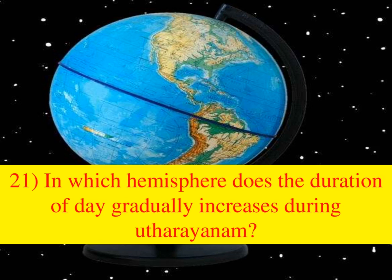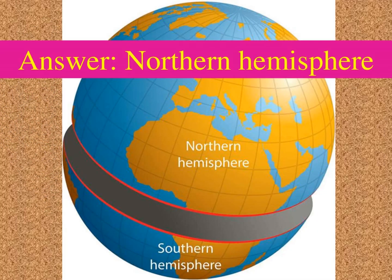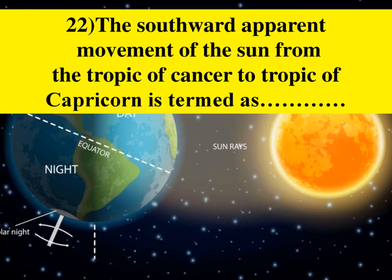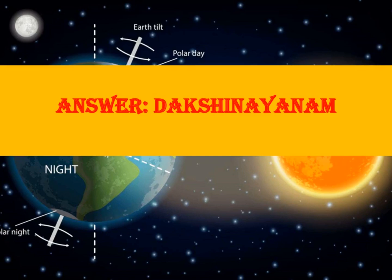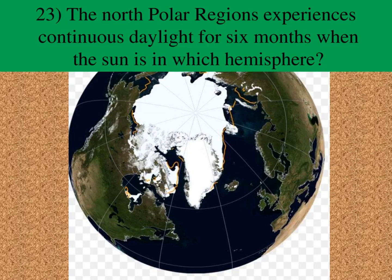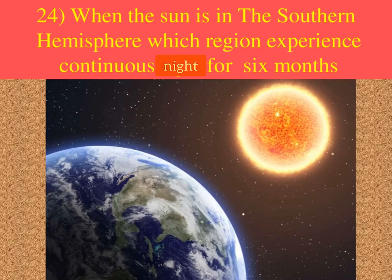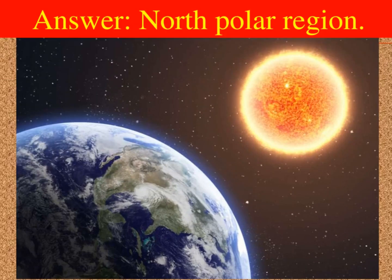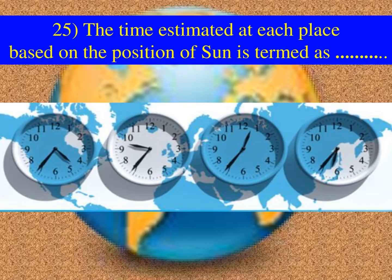In which hemisphere does the duration of the day gradually increase during Uttarayanam? Answer: Northern Hemisphere. The southward apparent movement of the Sun from the Tropic of Cancer to the Tropic of Capricorn is termed as Dakshinayanam. The north polar region experiences continuous daylight for six months when the Sun is in which hemisphere? Answer: Northern Hemisphere. When the Sun is in the Southern Hemisphere, which region experiences continuous night for six months? Answer: North polar region.